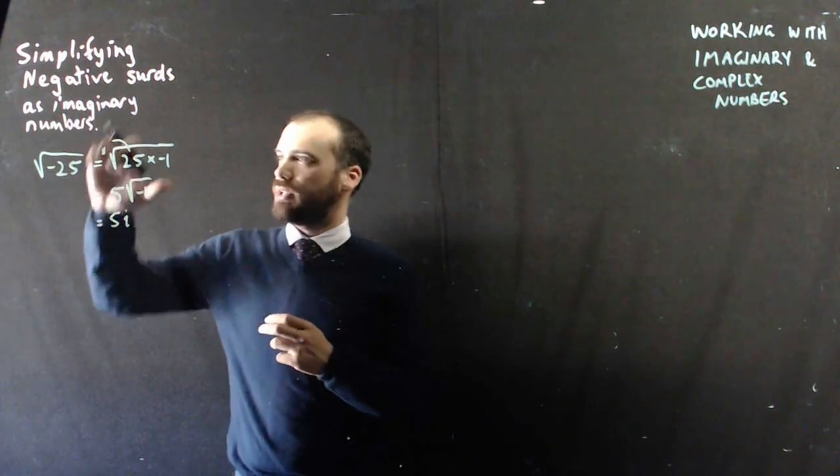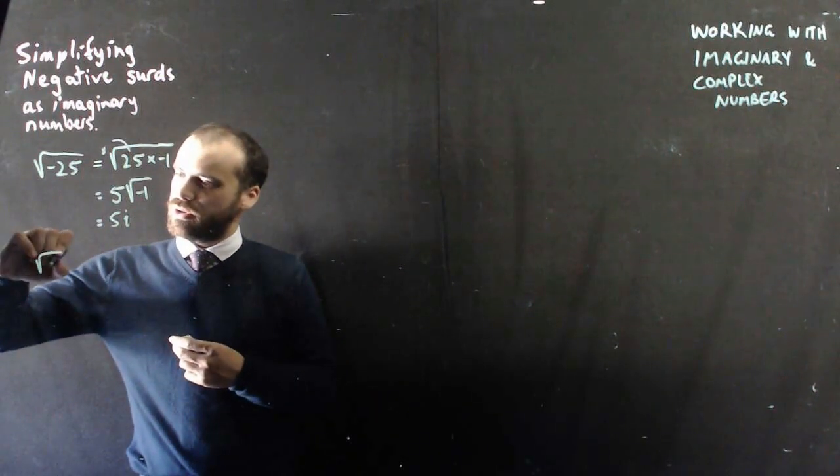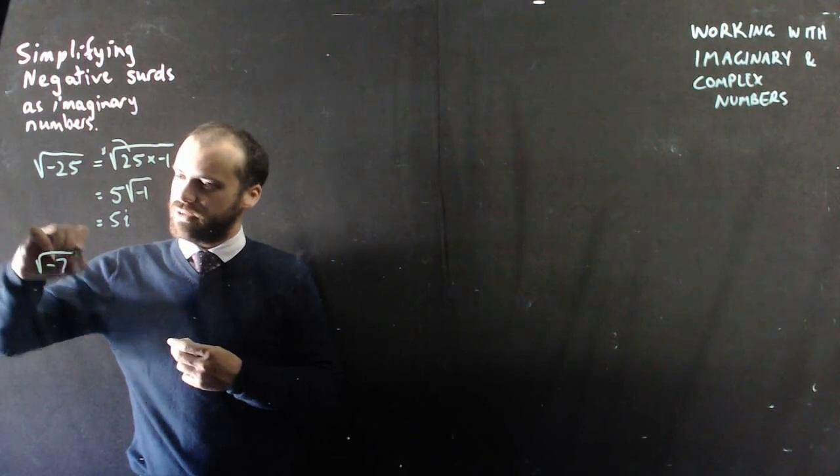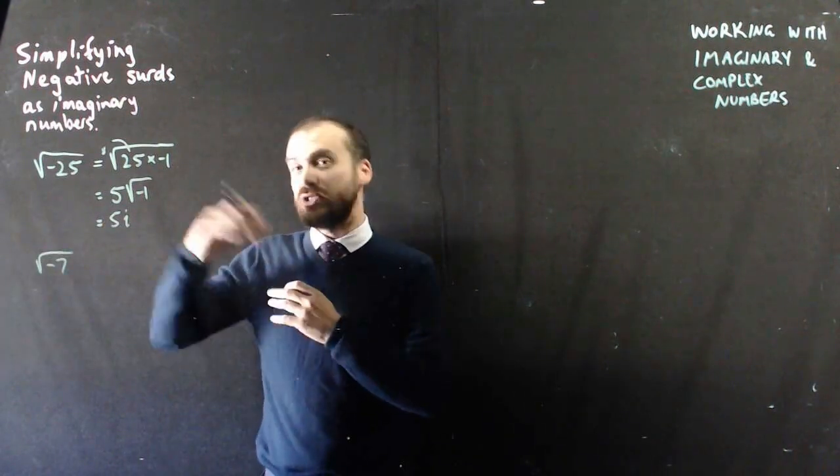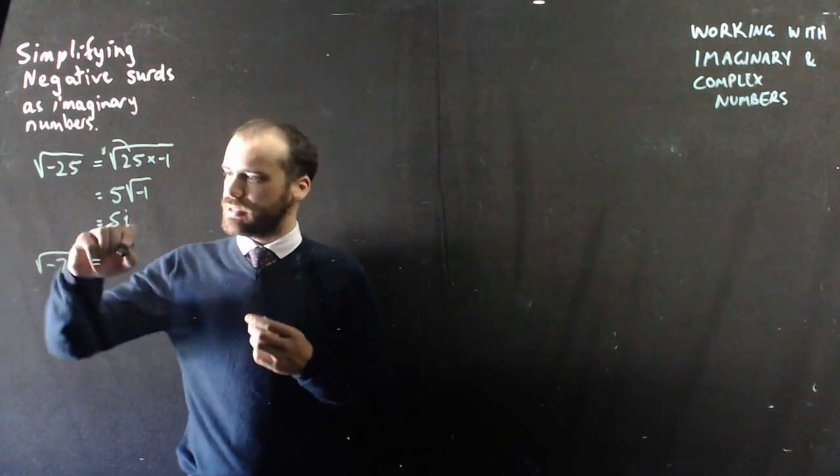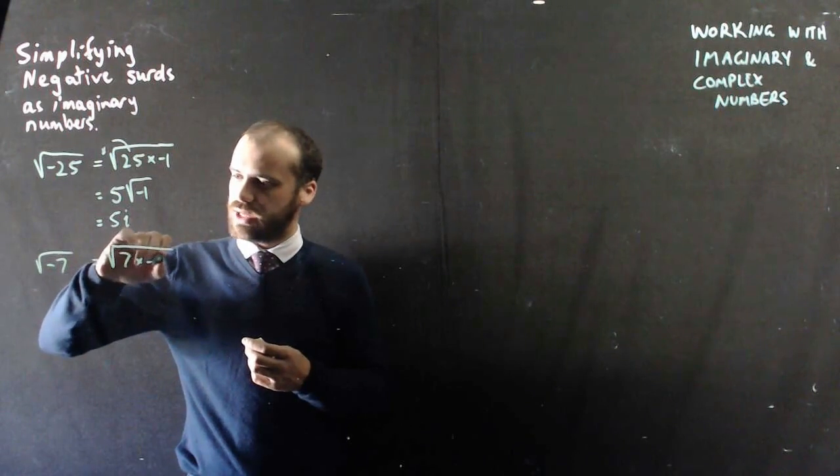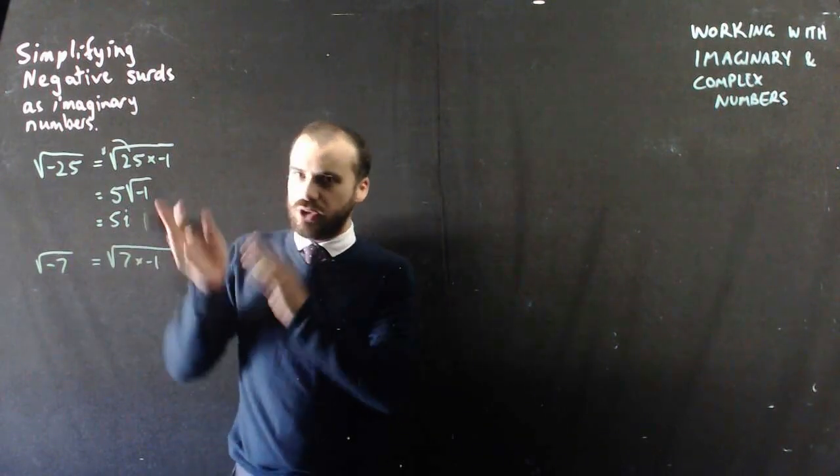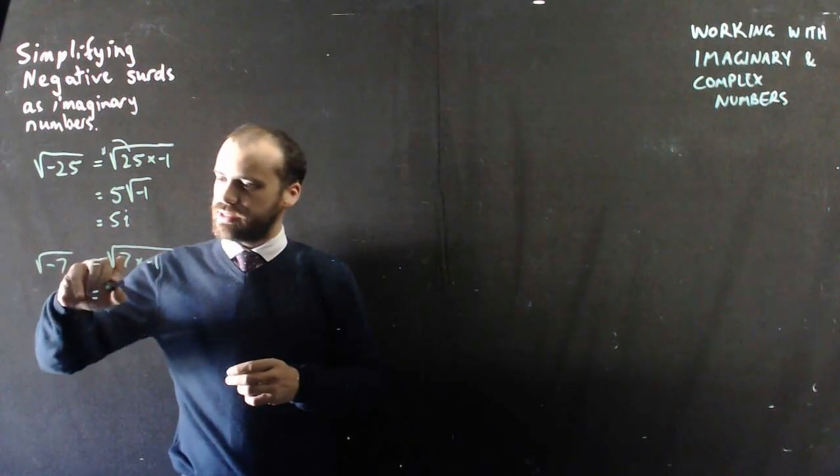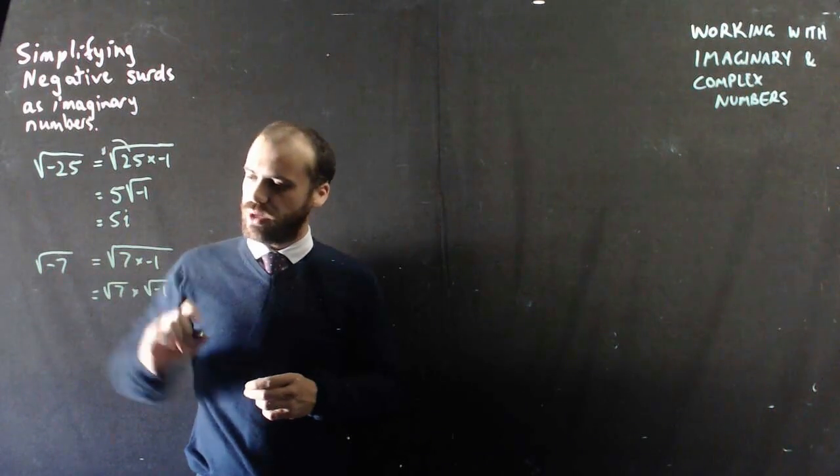Now that's all well and good, we've pulled out our square number, but if you had something more like this, square root of negative 7, well negative 7 is not going to come out easily. So I can rewrite this as the square root of positive 7 times negative 1, which if you know your surd rules we can say that that's the same as the square root of 7 times the square root of negative 1.